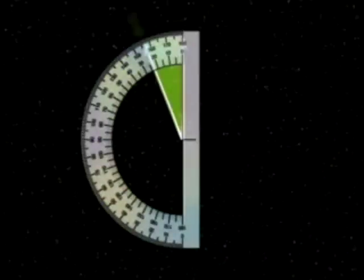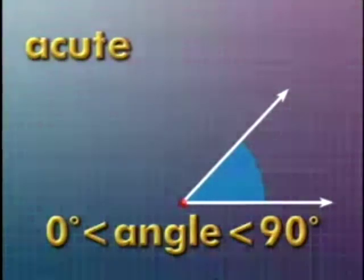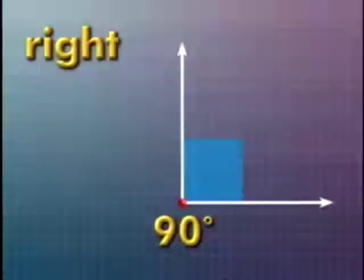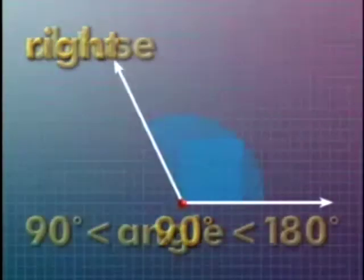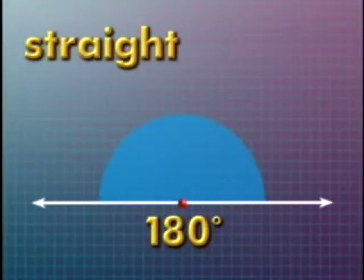You can measure angles using a protractor. The unit of measure is degrees. Angles can be classified by their measures as acute, right, obtuse, and straight.